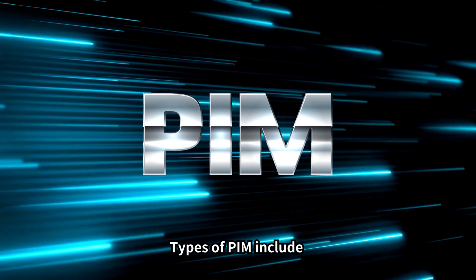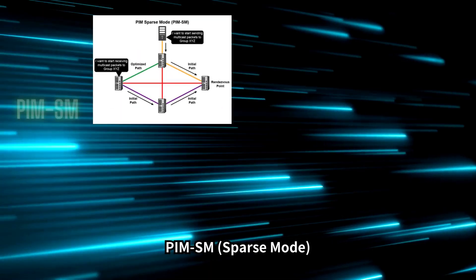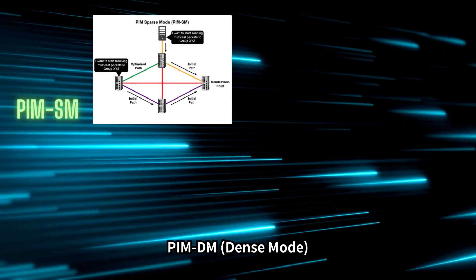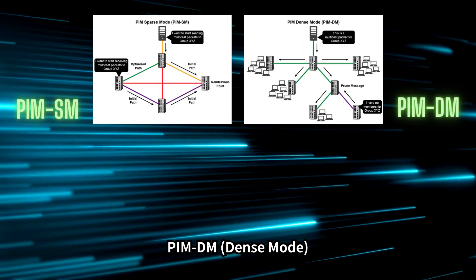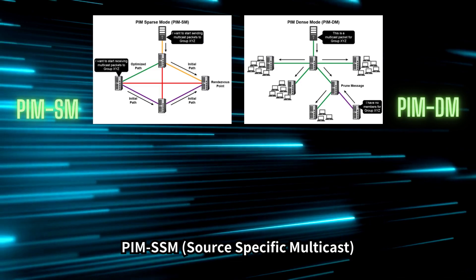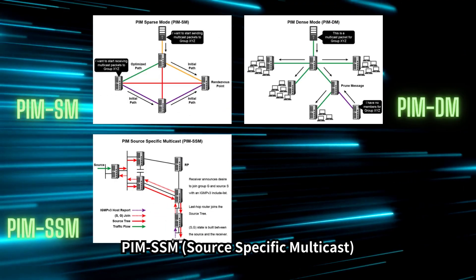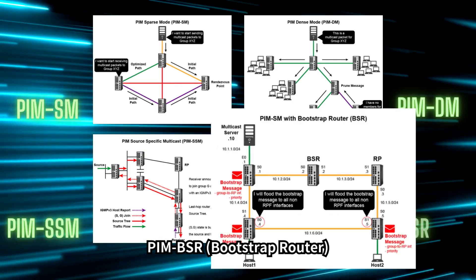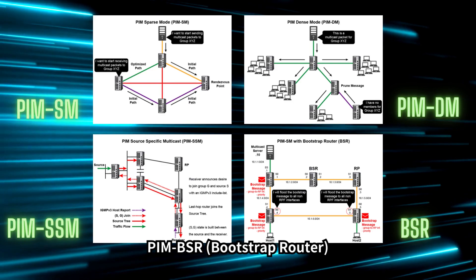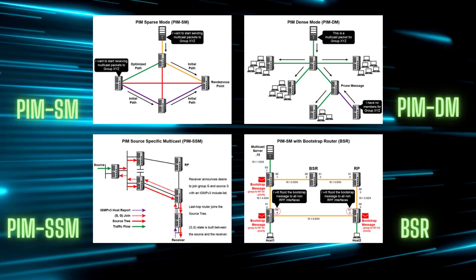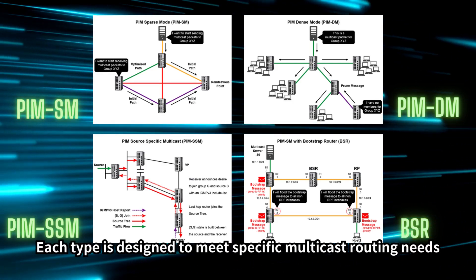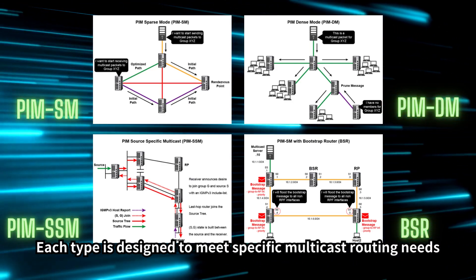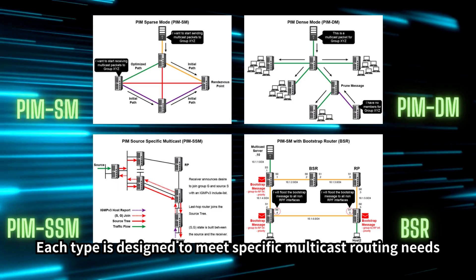Types of PIM include PIM-SM (sparse mode), PIM-DM (dense mode), PIM-SSM (source-specific multicast), and PIM-BSR (bootstrap router). Each type is designed to meet specific multicast routing needs.